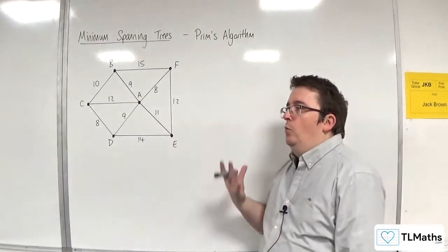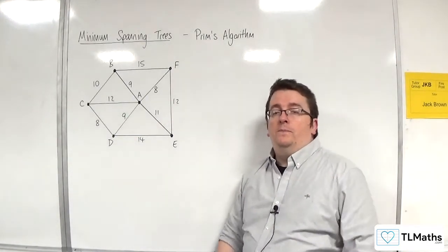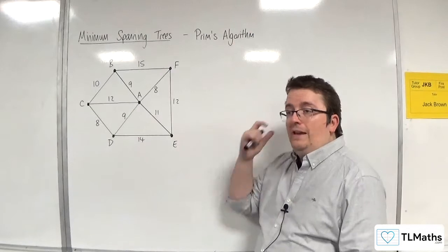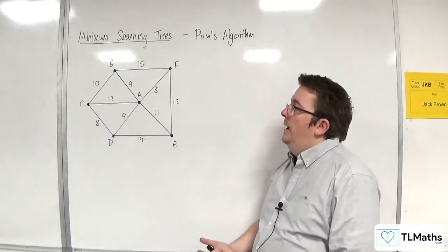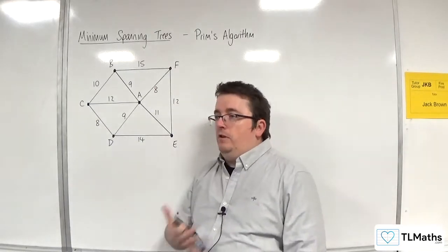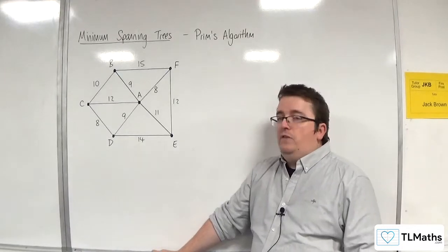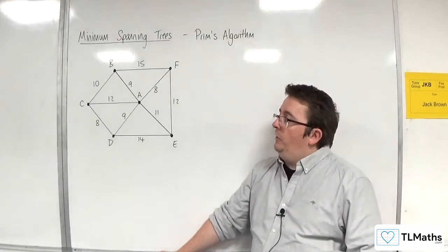And with Prim's, what you need to do is you need to know where you're going to start. So Prim's starts from a certain vertex. It doesn't matter where you start. If you were just doing this by yourself, it doesn't matter where you start using Prim's. It will give you the minimum spanning tree or give you an optimal solution.